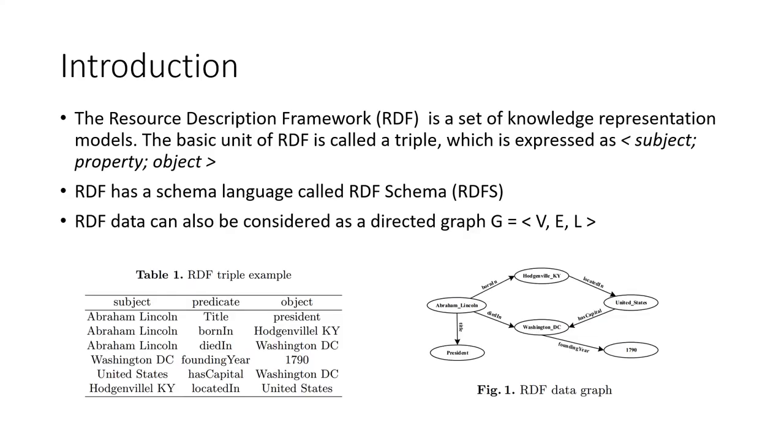The RDF is a set of knowledge representation models. As shown in Table 1, the basic unit of RDF is called a triple. RDFS is the schema language of RDF, which is used to describe the class to which the resource belongs, the properties of the resource, and the relationship between two resources. RDF data can also be considered as a directed graph, and Figure 1 is the corresponding graph of Table 1.